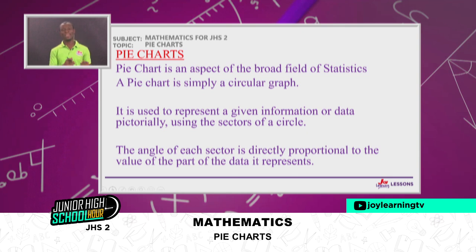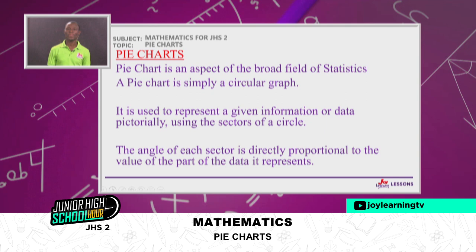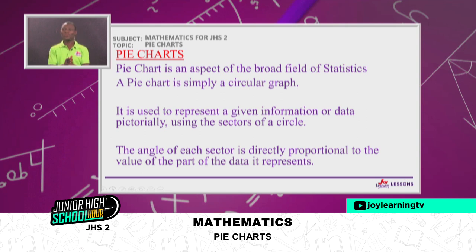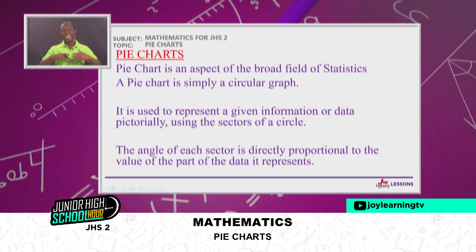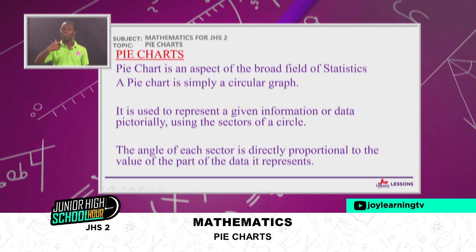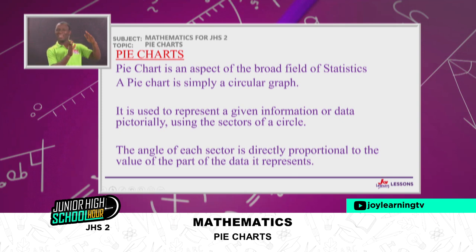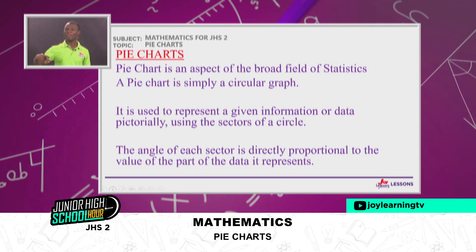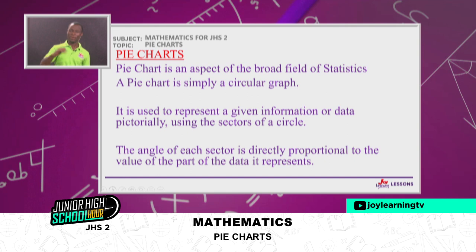The angle of each sector is directly proportional to the value of the parts of the data it represents. We did not just partition the circle anyhow — no. The value of the sector, in terms of its angle, is proportional to the value of the data it represents. That means if there were more events in the data, the sector for that event will be bigger. They are calculated and measured before being presented.